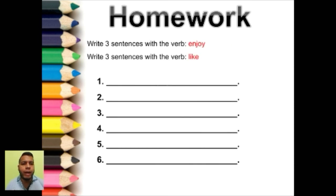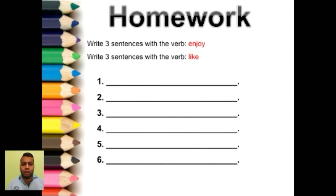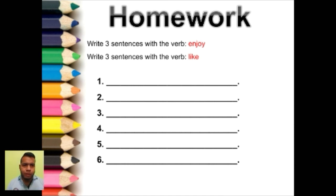As homework, guys, you have to write three sentences with the verb 'enjoy' and three sentences with the verb 'like' — a total of six sentences. Tres oraciones con el verbo 'enjoy' y tres oraciones con el verbo 'like.' For example: 'I like going to the cinema' — me gusta ir al cine. That's my example; you write three and three.